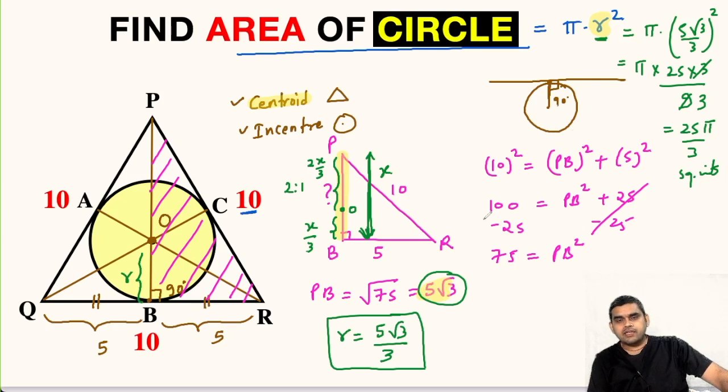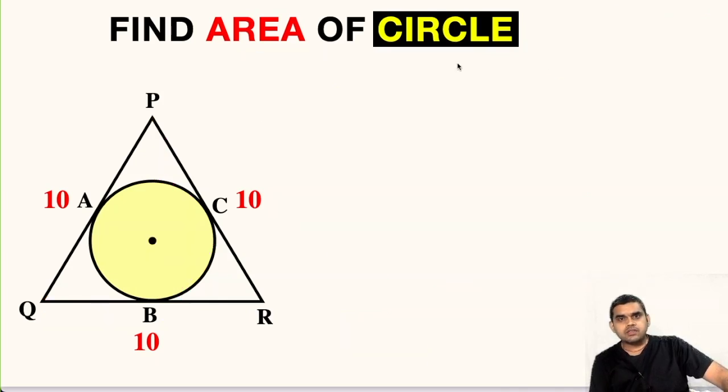Now we can use another method that is using trigonometry to find the area. So let us try method number 2. As we have seen area of circle is pi times radius squared. So in this method also our main aim will be to find the value of r. So let us join P and B.